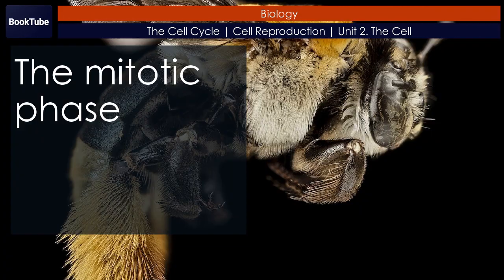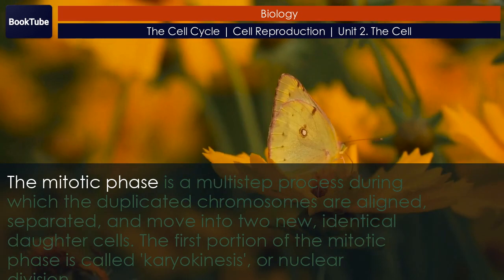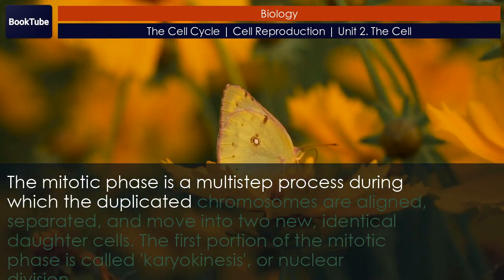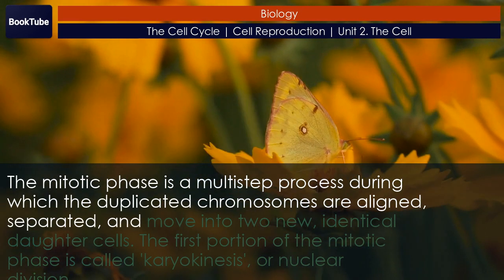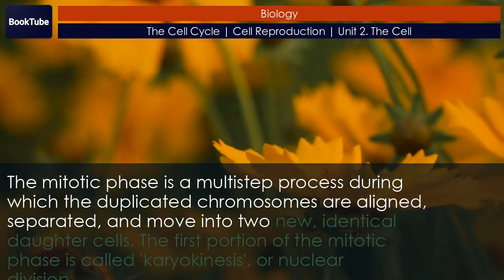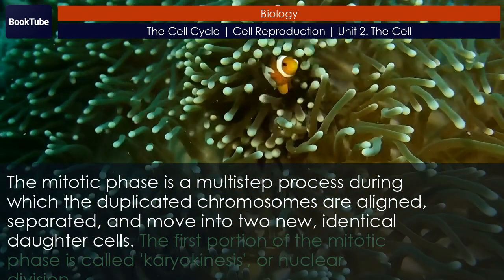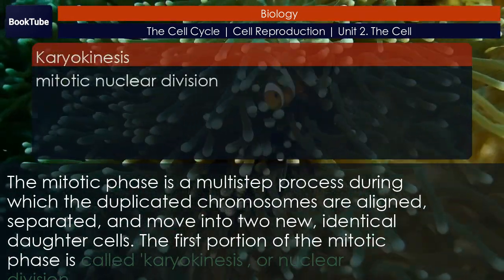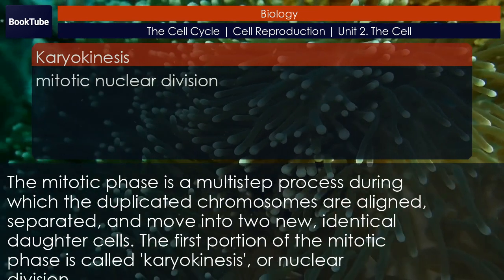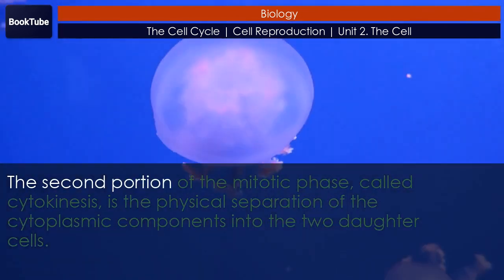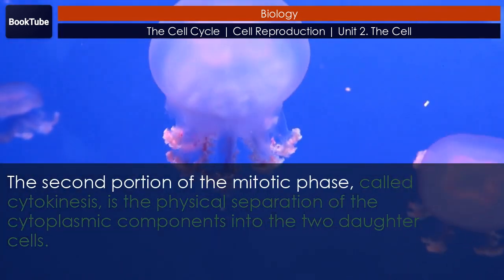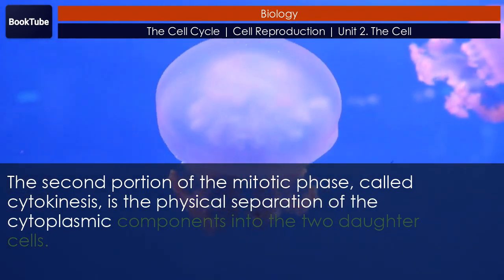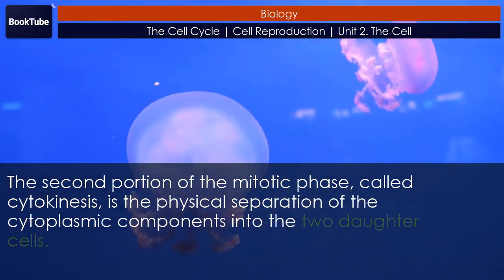The mitotic phase is a multi-step process during which the duplicated chromosomes are aligned, separated, and move into two new identical daughter cells. The first portion of the mitotic phase is called karyokinesis, or nuclear division. The second portion, called cytokinesis, is the physical separation of the cytoplasmic components into the two daughter cells.